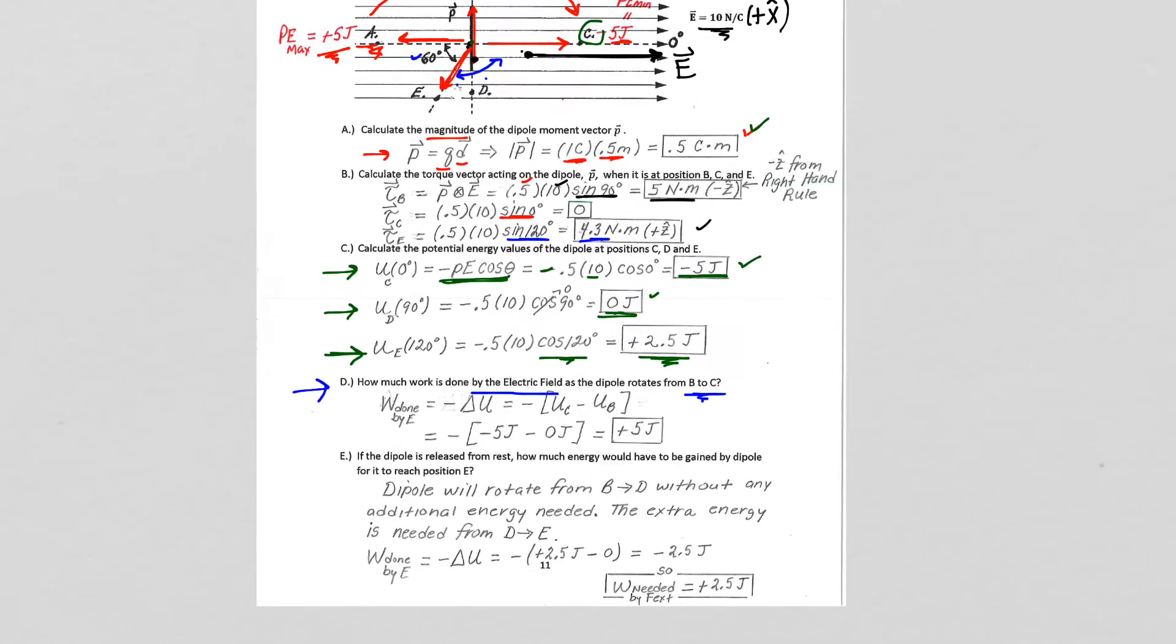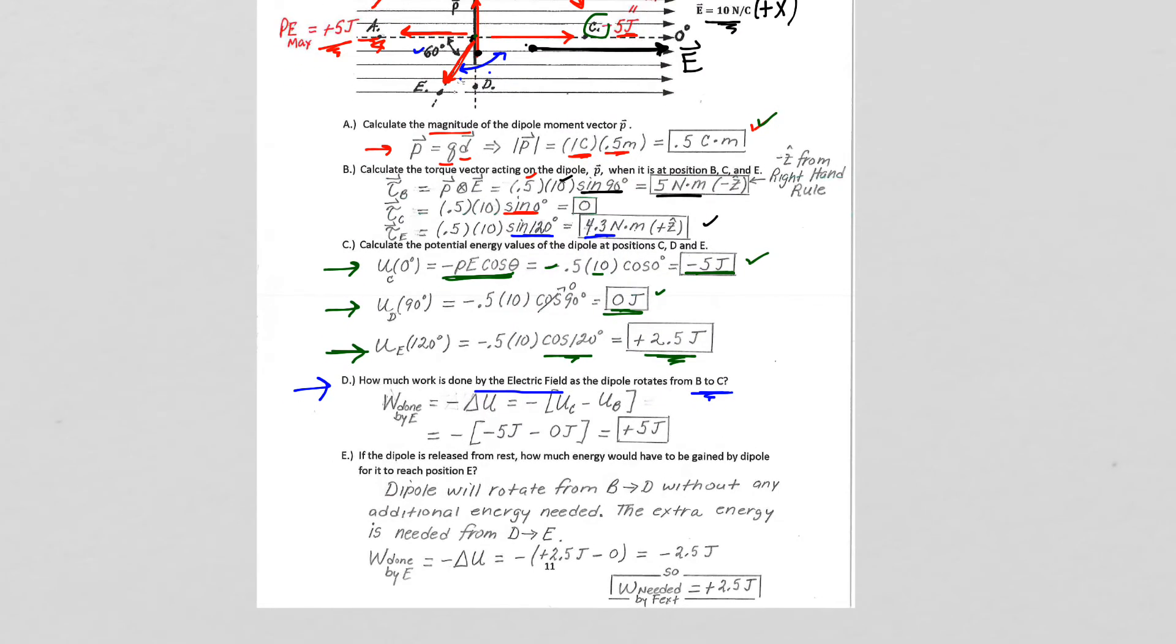It says how much work in part D, how much work is done by the electric field, work done by the electric field as the dipole rotates from B to C? Well, if it's final, delta U, work done by the field is negative the change in potential energy.